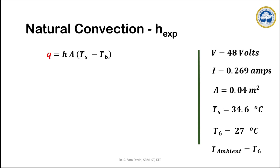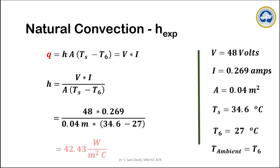The convective heat transfer rate is given by Newton's law of cooling: Q = H·A·ΔT, where ΔT is the temperature difference between the surface temperature of the metal rod and the ambient temperature. The rate of heat input is calculated by multiplying voltage by current. Rearranging the equation in terms of H and substituting all known values, the experimental heat transfer coefficient comes to be 42.43 W/m²·°C.